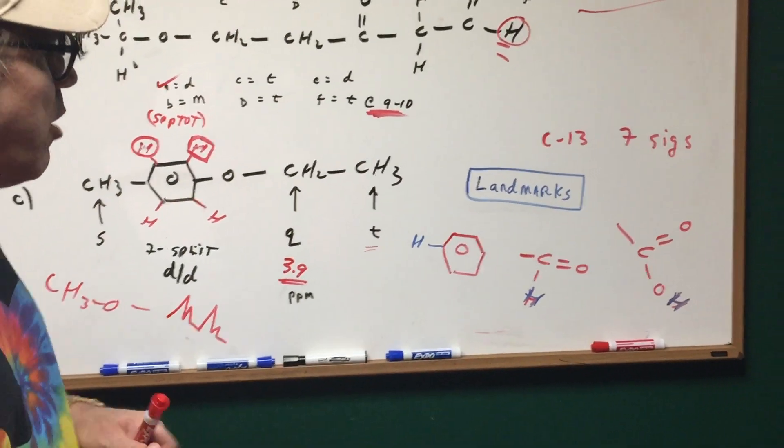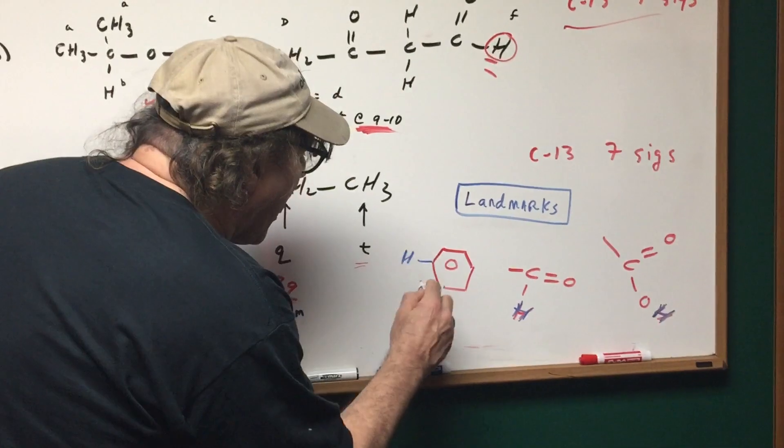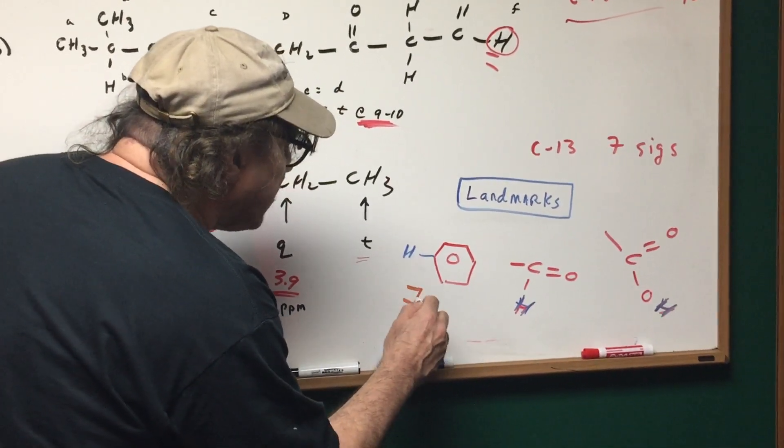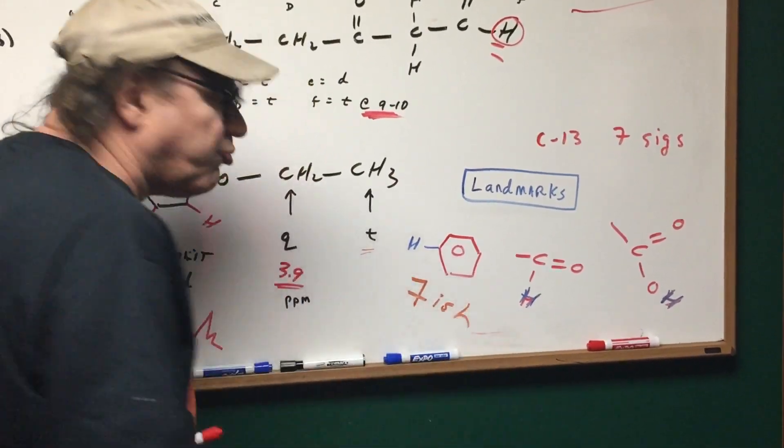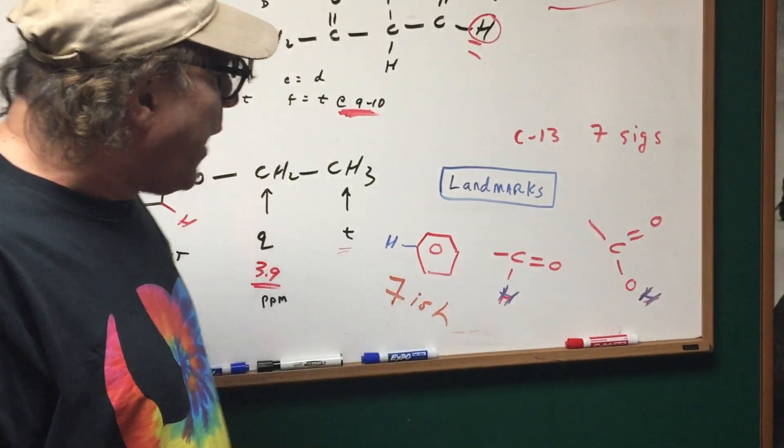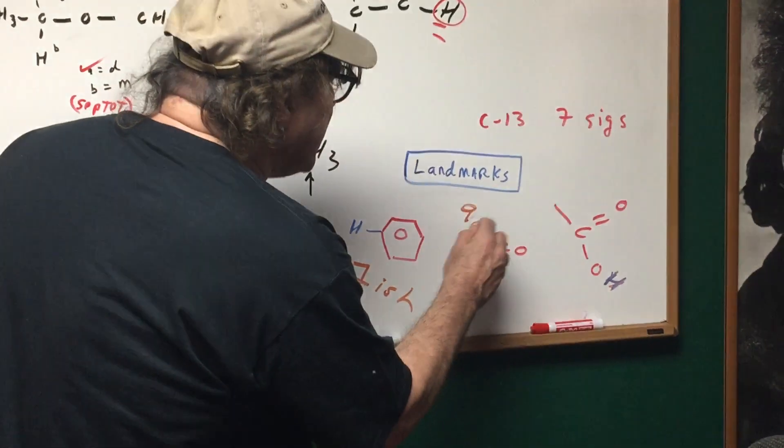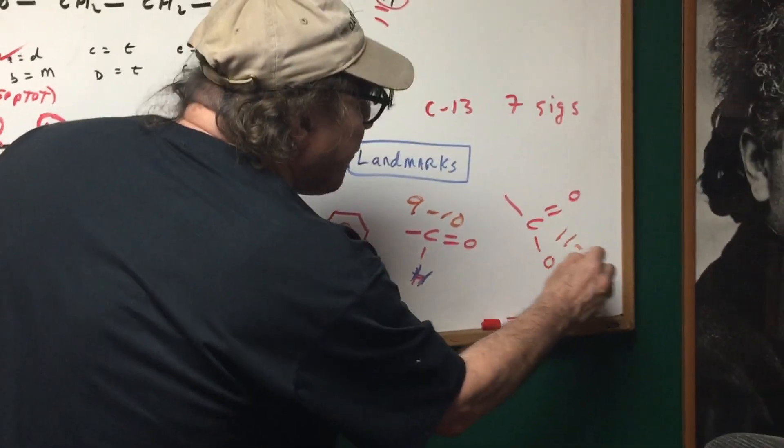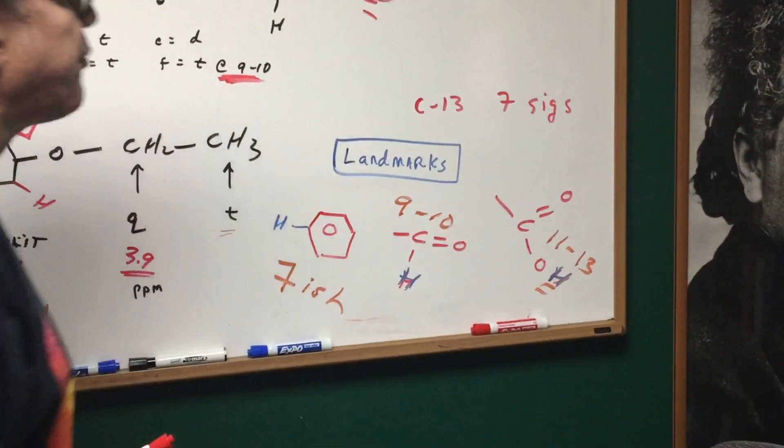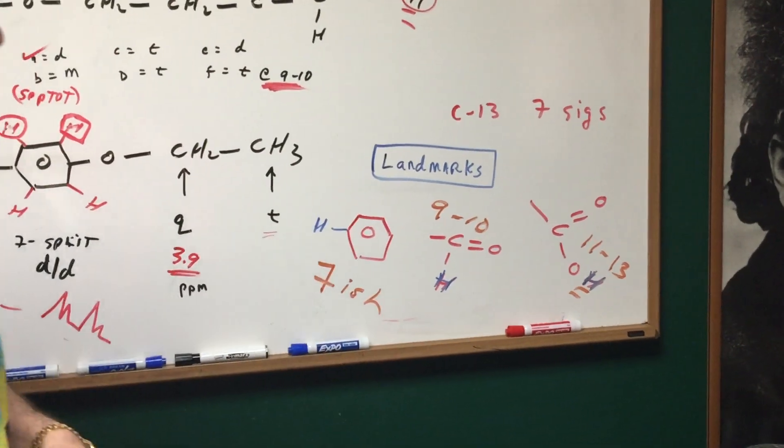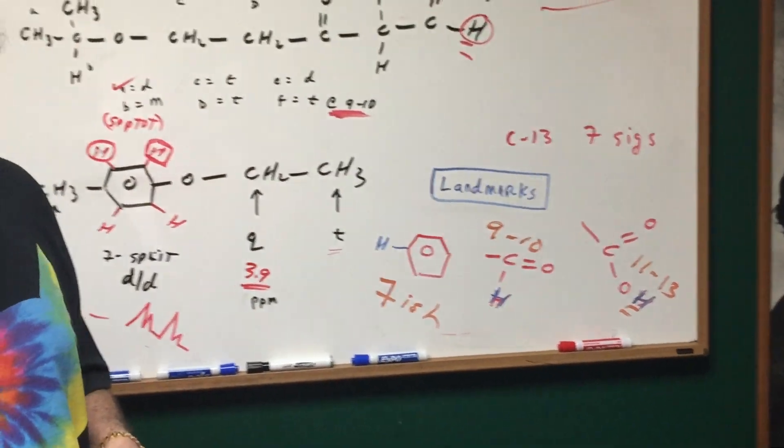Last but not least, just go over your landmarks. Again, a hydrogen attached to a benzene ring is around 7-ish. None of these numbers are exact. A hydrogen attached to the aldehyde group is around 9 to 10, and way downfield, from around 11 to 13 would be a hydrogen that's attached to a carboxy group.